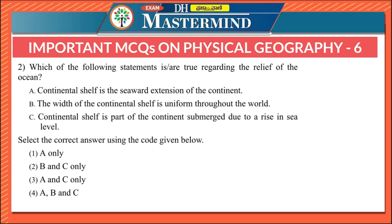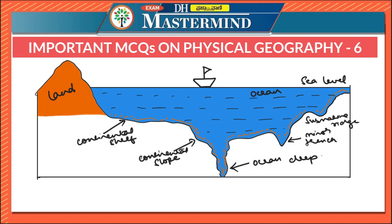The second question asks about the relief of the ocean. Continental shelf is the seaward extension of the continent — this is correct. The width of the continental shelf is uniform throughout the world — this is false. Continental shelf is part of the continent submerged due to a rising sea level — this is correct. So the right option is A and C only. The continental shelf is a shallow platform extending from the shoreline to the continental edge.